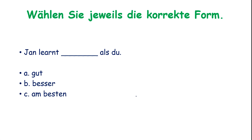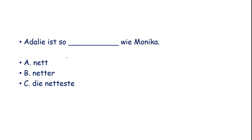Let's see some more examples. One sentence uses als with comparison — adjective should be with -er, plus als. Another: Adela ist so... wie — adjective should be in the same form, no change — so, adjective, wie.